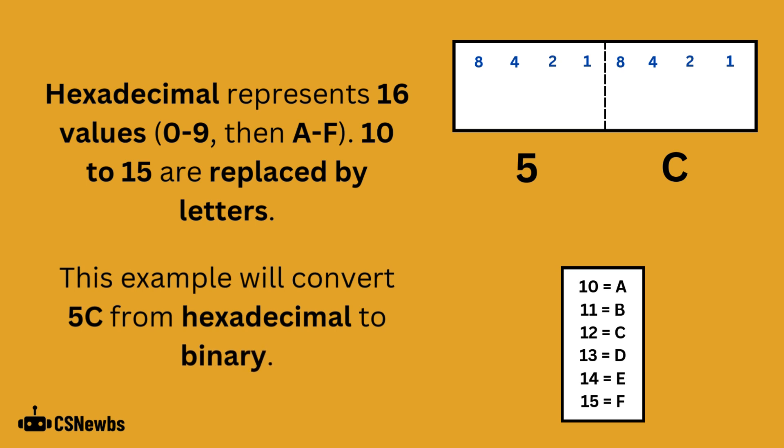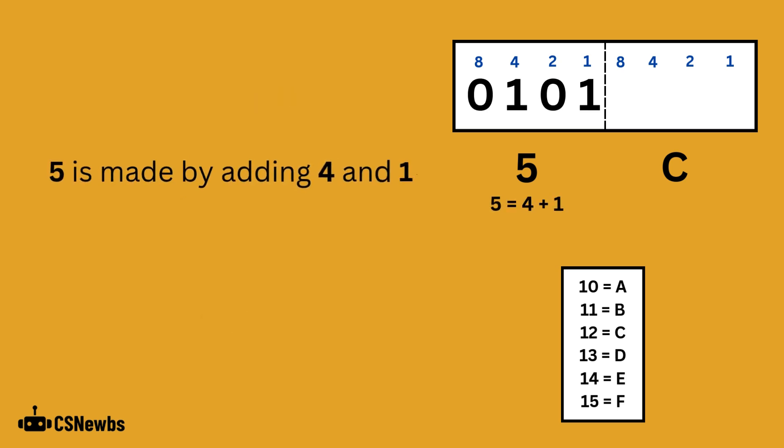This example will convert 5C from hexadecimal to binary. 5 is made by adding 4 and 1. Write a 1 beneath those two place values.